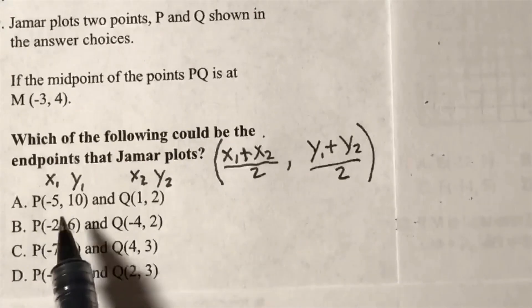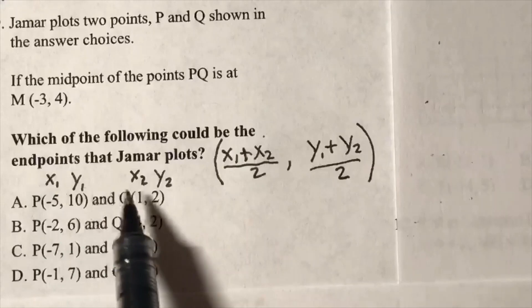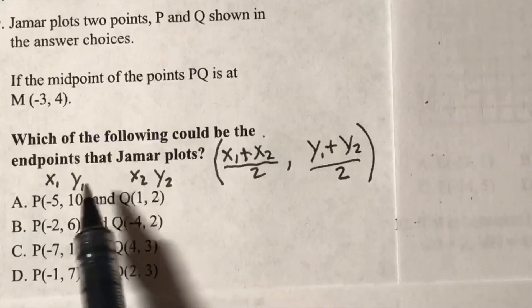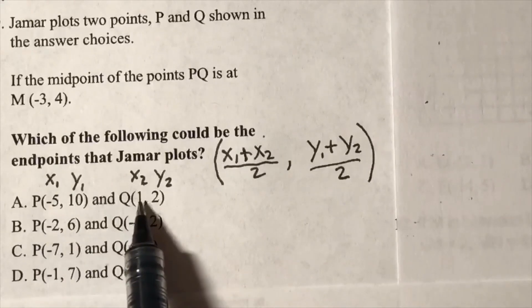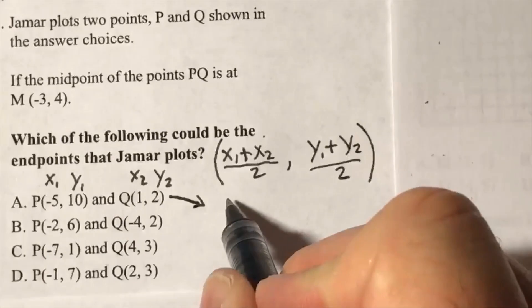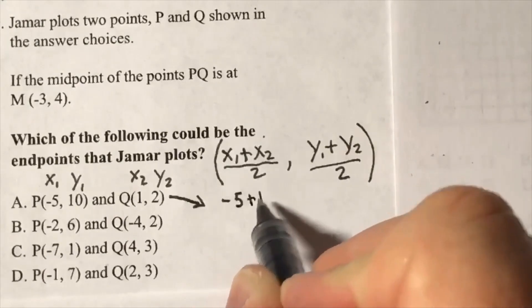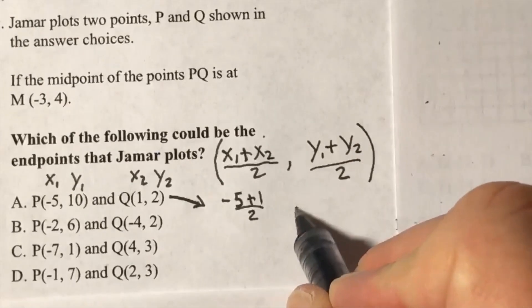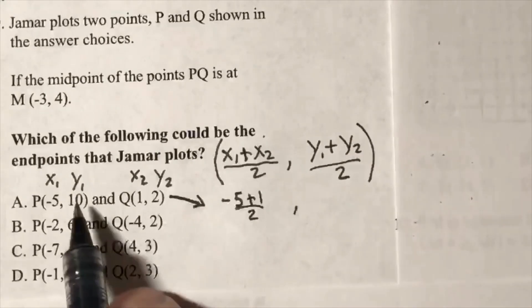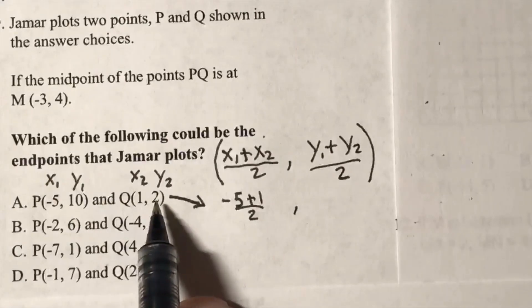Can we see -5 + 1? What is -5 + 1? So I'm doing -5 + 1 divided by 2, and then I'm going to bring over the 10 + 2 here.